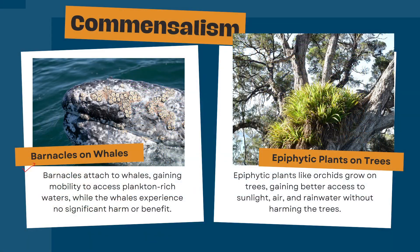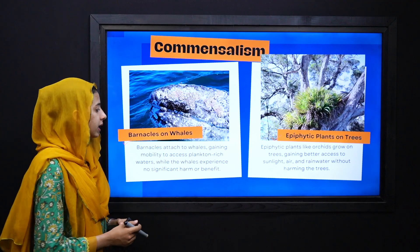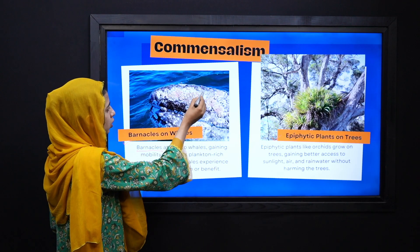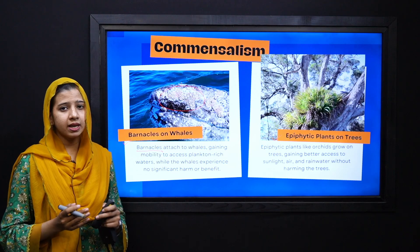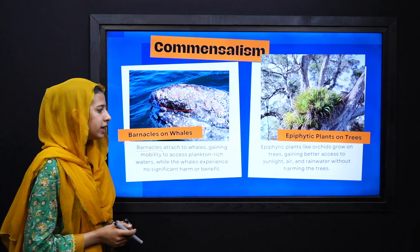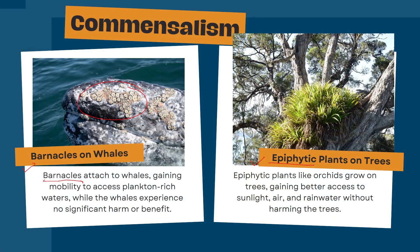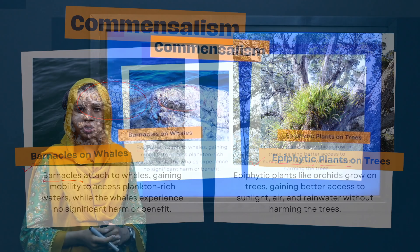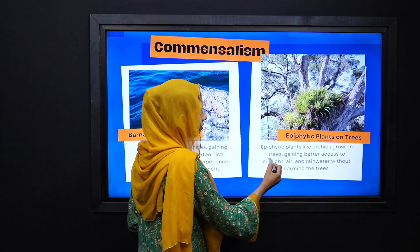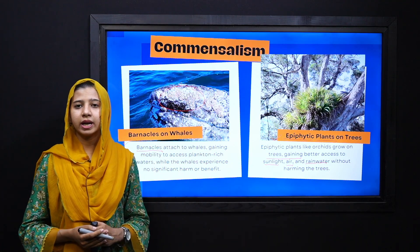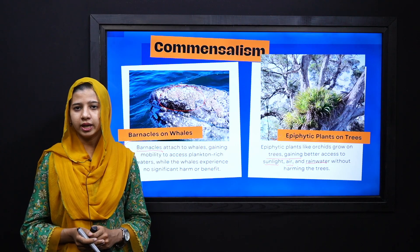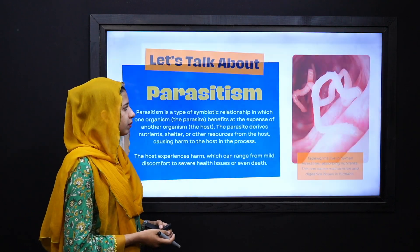Other examples of commensalism are barnacles on whales and epiphytic plants on trees. Barnacles attach to whales to be transported toward plankton-rich water, without causing any benefit or harm to the whale. Similarly, epiphytic plants grow on trees to get sunlight, air, and rainwater, but they cause no harm to the host tree.